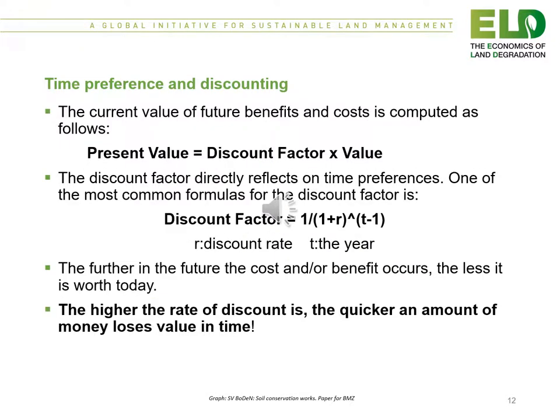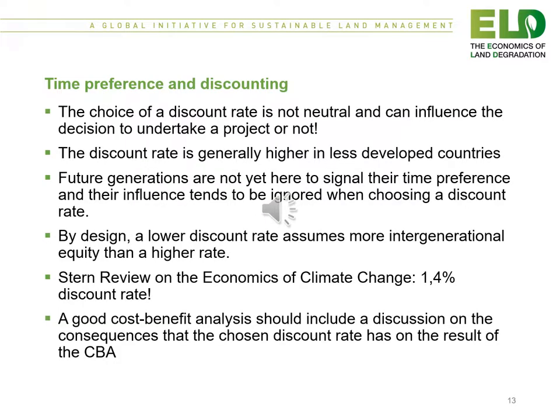The current value of future benefits and costs is computed as follows: present value equals a discount factor times the value. The discount factor directly reflects time preferences. One of the most common formulas for the discount rate is presented on the slide. The further in the future a cost or benefit occurs, the less it is worth today, and the higher the rate of discount, the quicker an amount of money loses value in time. The choice of discount rate is often controversial and can influence the decision to undertake a project or not.